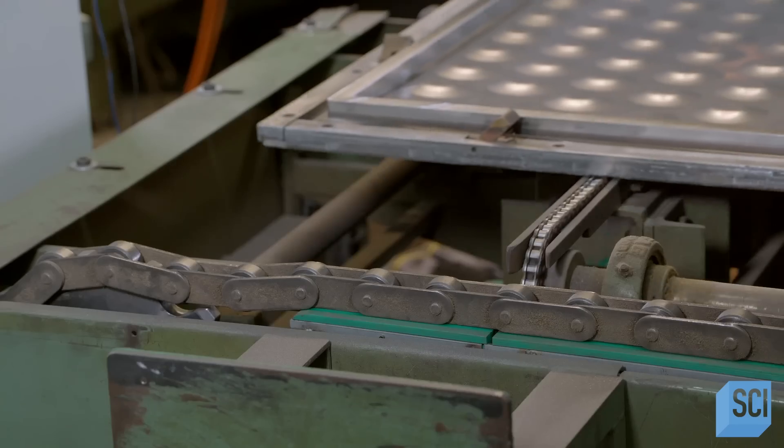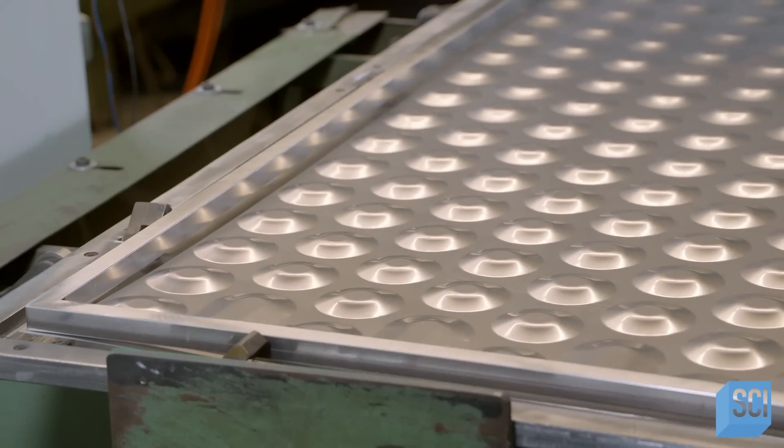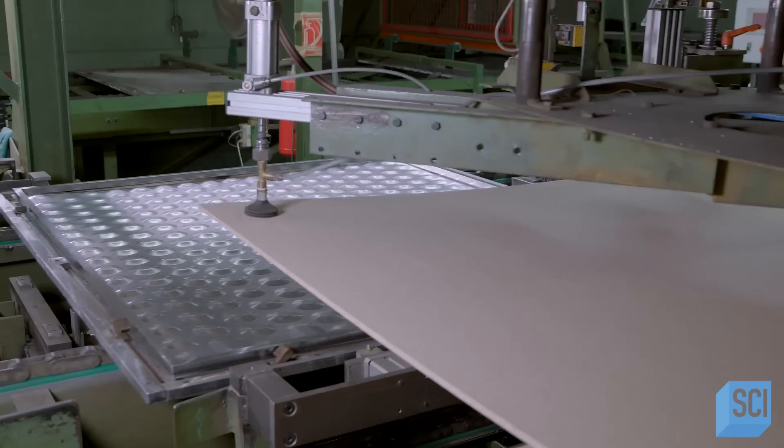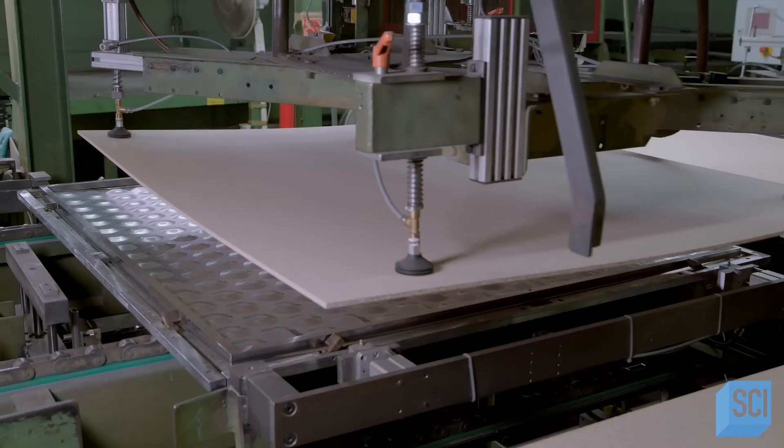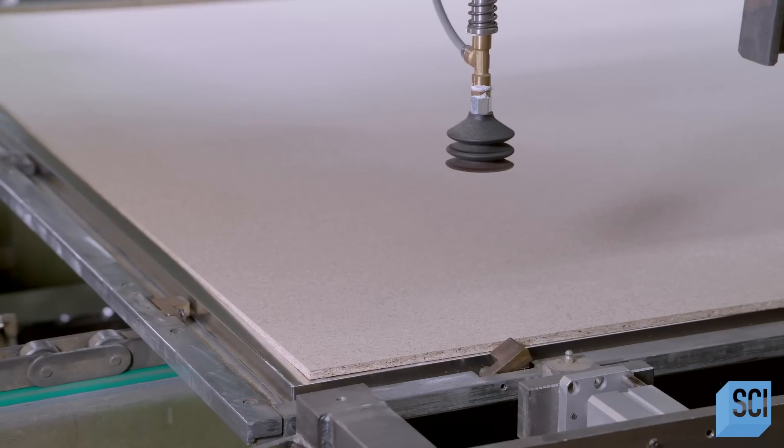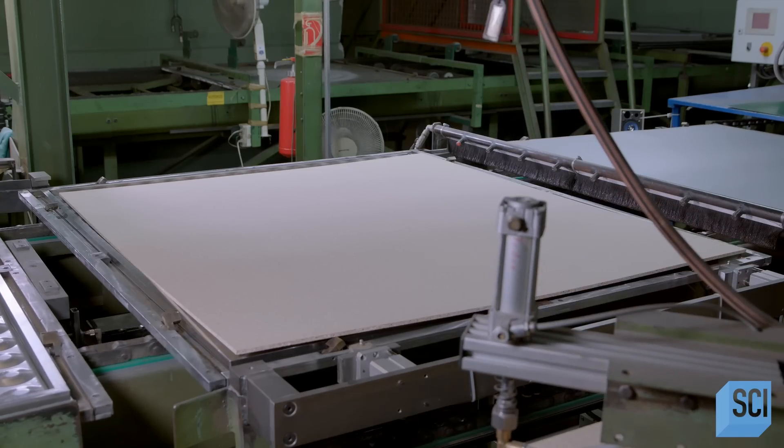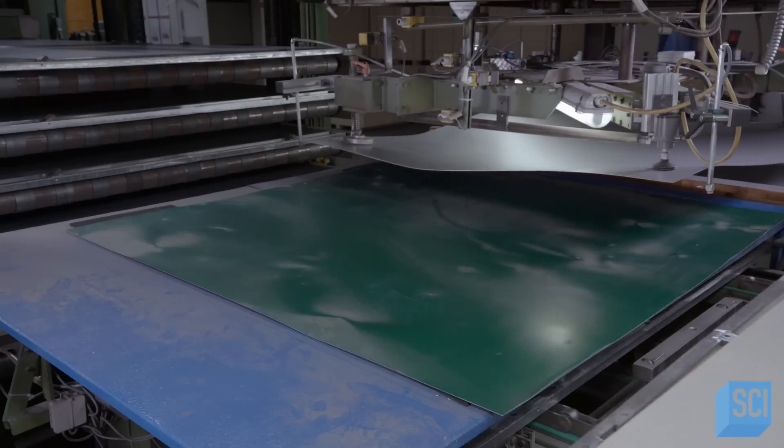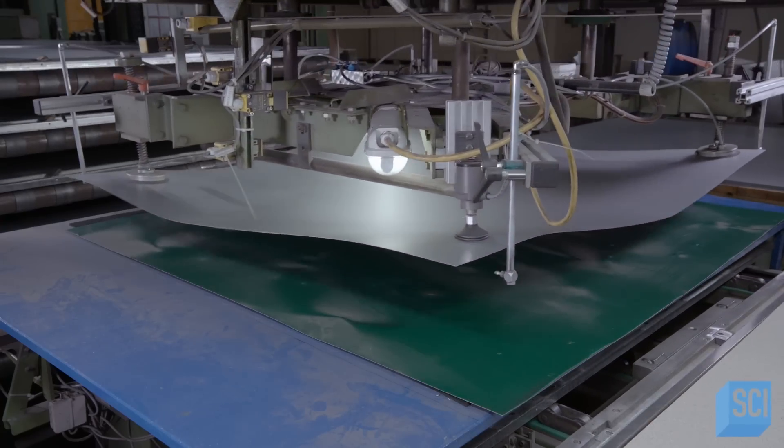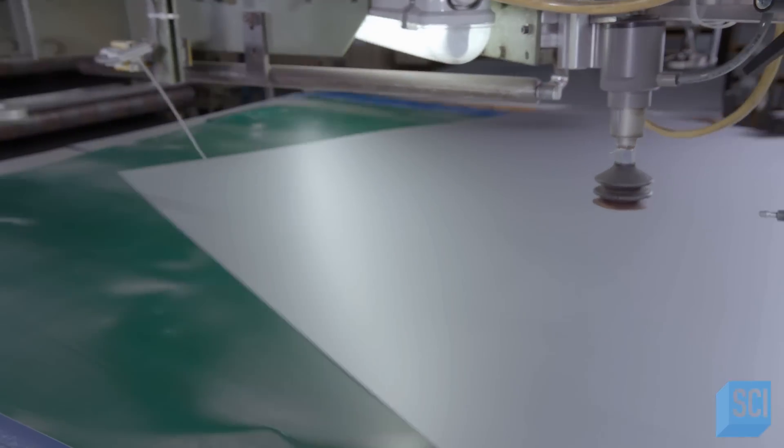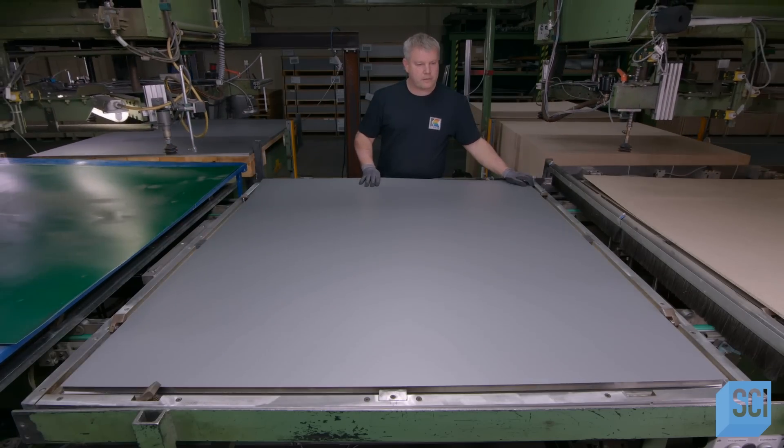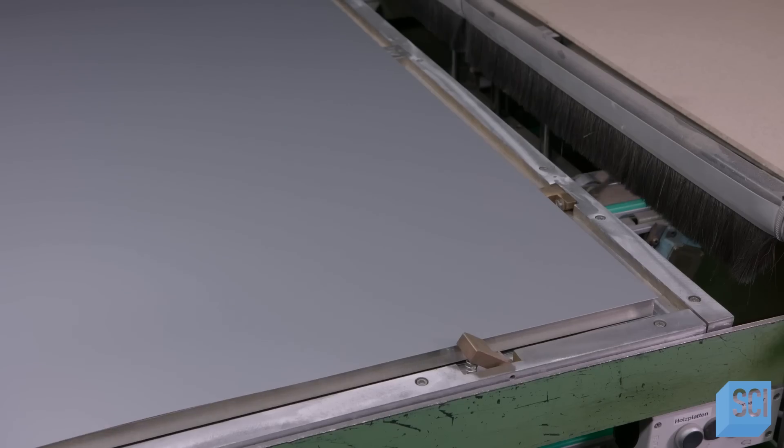A conveyor transfers the jig to the next station. Then the jig connects with an 8mm thick sheet of particle board made of wood chips and glue. The board is coated with a heat-activated adhesive film on both sides. At the next station, an aluminum sheet is placed on top of the particle board. This step completes the plate component assembly.